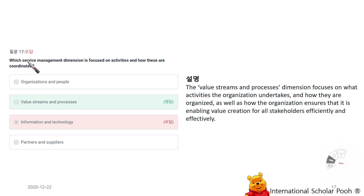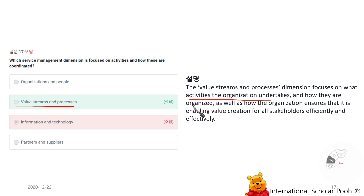Which service management dimension is focused on activities and how these are coordinated? Value Streams and Processes. The value streams and processes dimension focuses on what activities the organization undertakes and how they are organized, as well as how the organization ensures it is enabling value creation for all stakeholders efficiently and effectively.